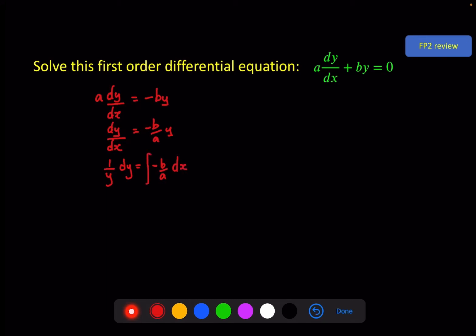Now I can integrate both sides. On the left, I get log y. On the right, minus b over ax plus c. Raise that to be a power on e. And then, as is convention, I'll change the plus c to an A.